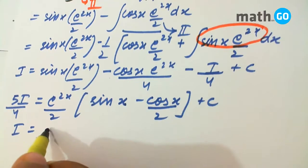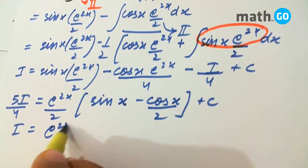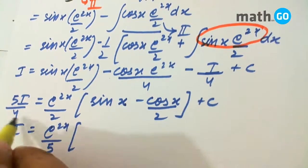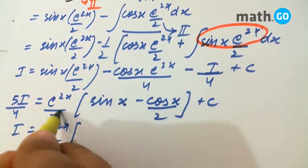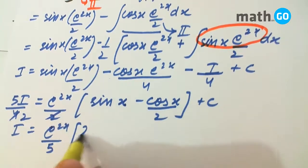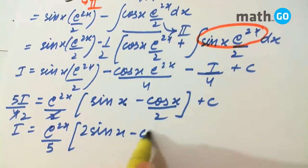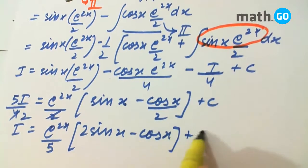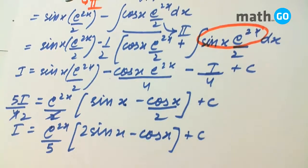If we multiply by 4, this cancels to 2, so we get e to the power 2x by 5, times 2 sin x minus cos x, plus C, which is our answer. Thank you very much.